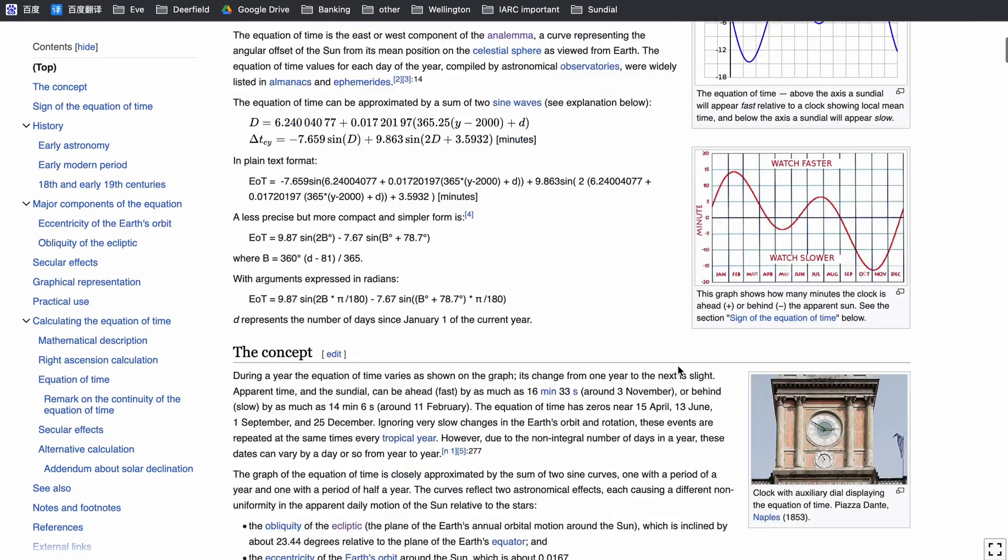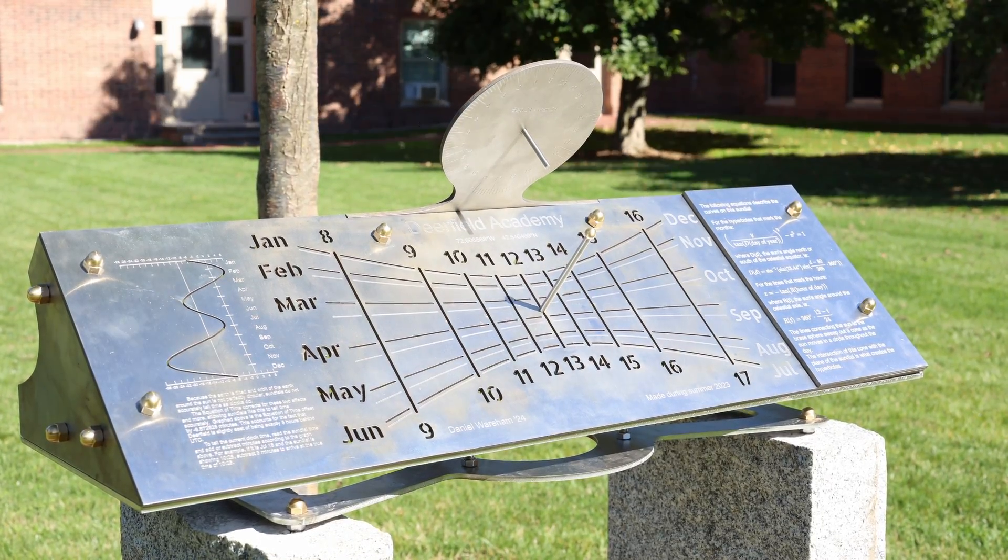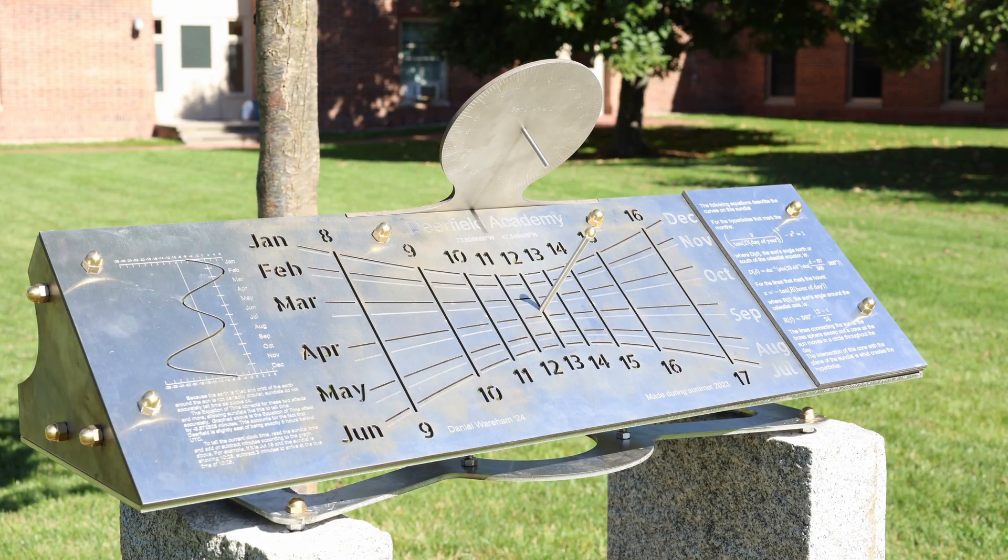So I got some books, did a bunch of research, and ended up with this. You read the sundial by looking at the shadow of the brass sphere, and its position tells you both the current time of day and day of year.